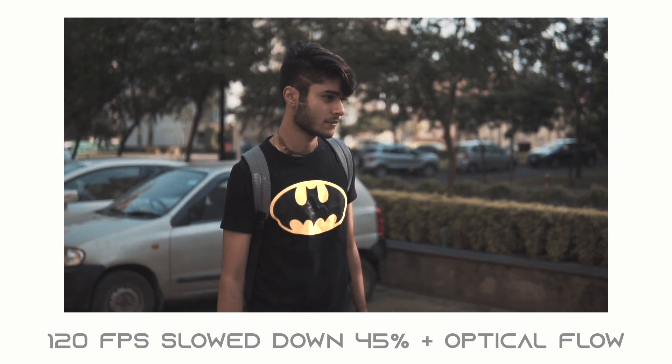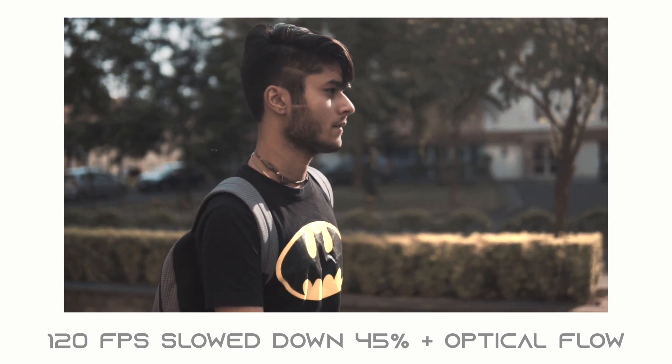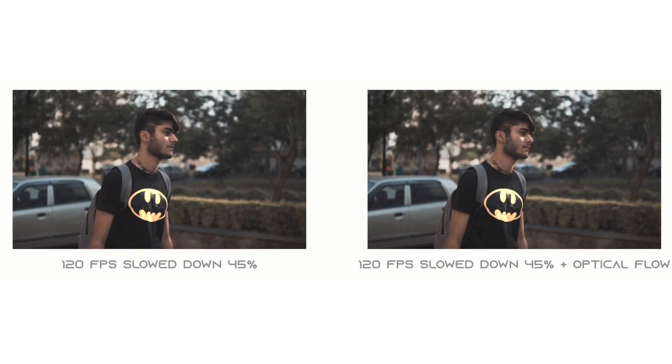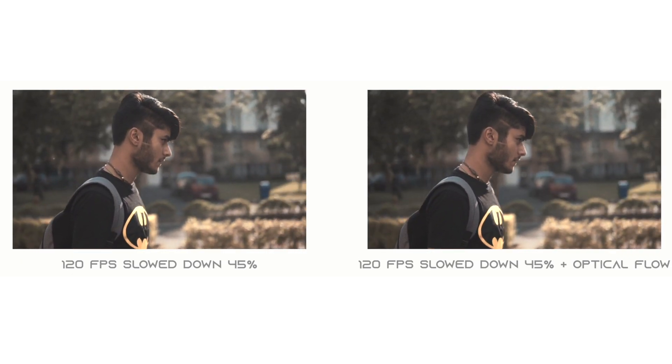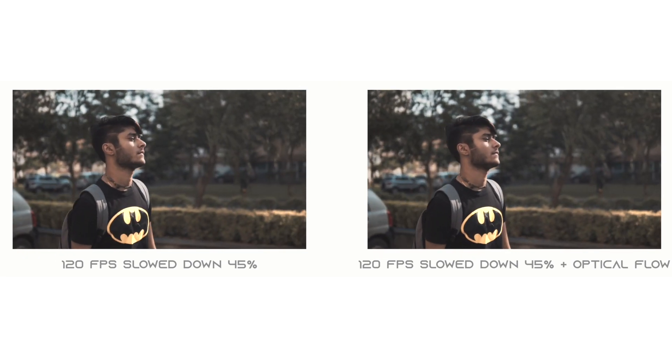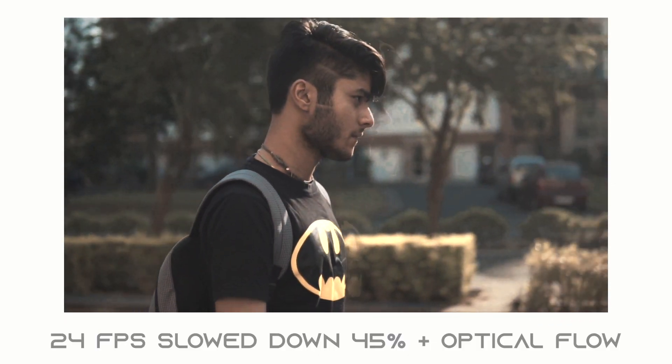This is the 120 fps footage with optical flow slowed down to 48%. As you can see, the optical flow is much smoother than the normal 45%. Since the person is not moving at a very fast pace, it looks great. But if the person were running and you slowed it down with optical flow, you would definitely see some wobbling between frames — caused by too much movement. In that case, just slow it down normally to 45% or 20% without optical flow.